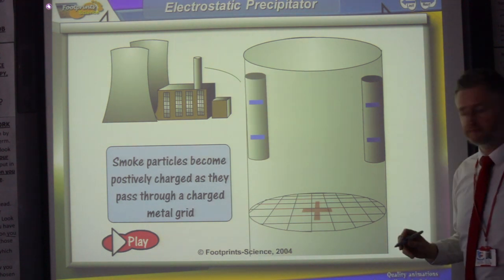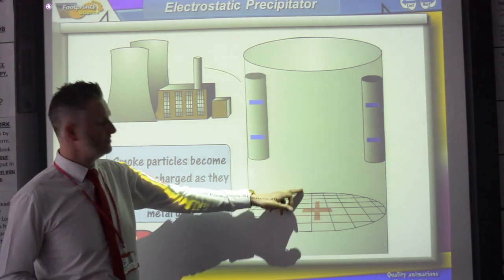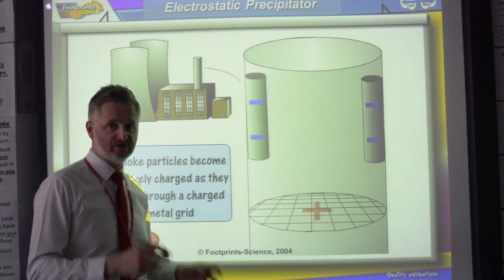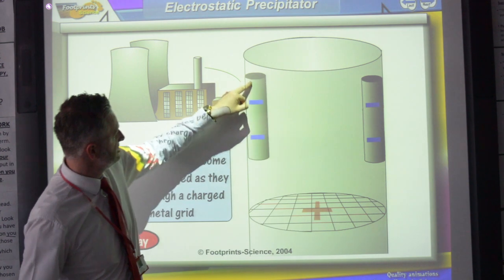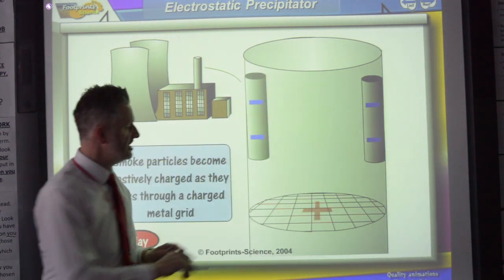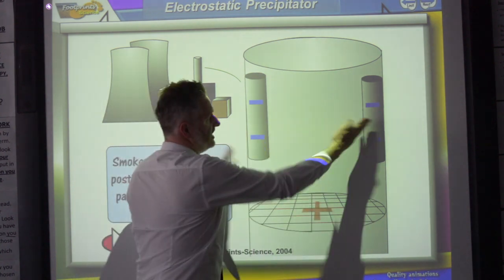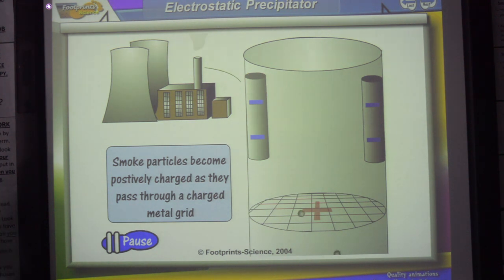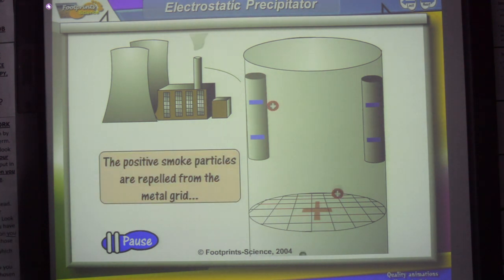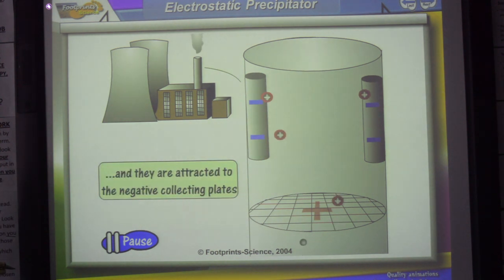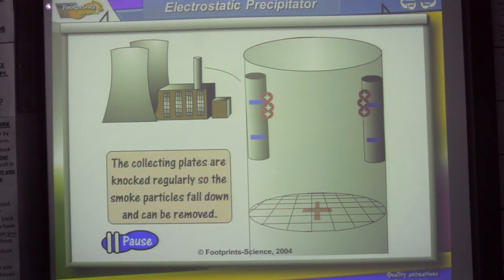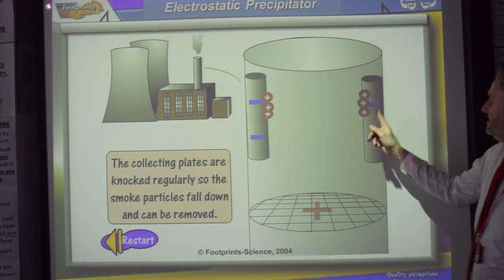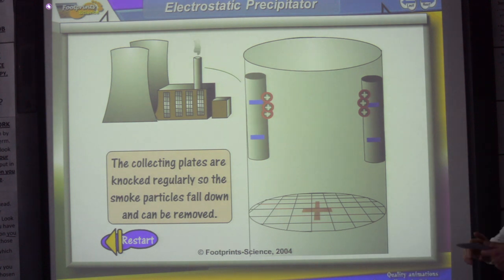So this is the electrostatic precipitator. Basically what you're going to see is some smoke particles coming up through here. Now as the smoke particles come up through the grid, that's a positively charged grid. So the smoke particles become positive. Now as they move further up the chimney, you can see these two plates here are negatively charged. So positively charged smoke particles are going to get attracted toward the negative plates. And that stops the smoke from coming out the top and potentially polluting the environment with harmful gases. The harmful gases could be sulfur dioxide or nitrogen oxides. Then a hammer would just strike these and the soot would fall to the bottom of the chimney.